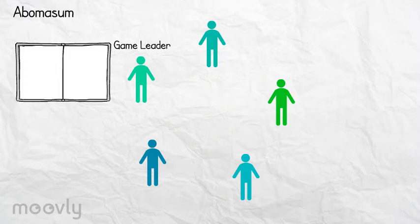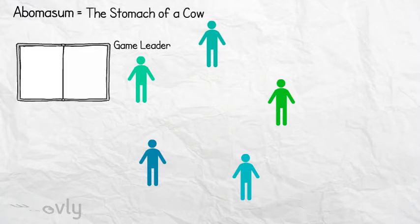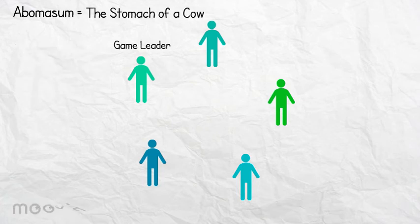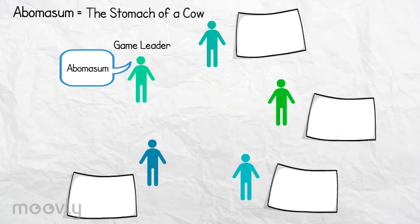Abomasum means the stomach of a cow. He reads the word out loud without saying the meaning of the word. Every participant writes down on paper a self-made meaning of the word abomasum, of which he thinks the other participants would believe it's the real meaning.